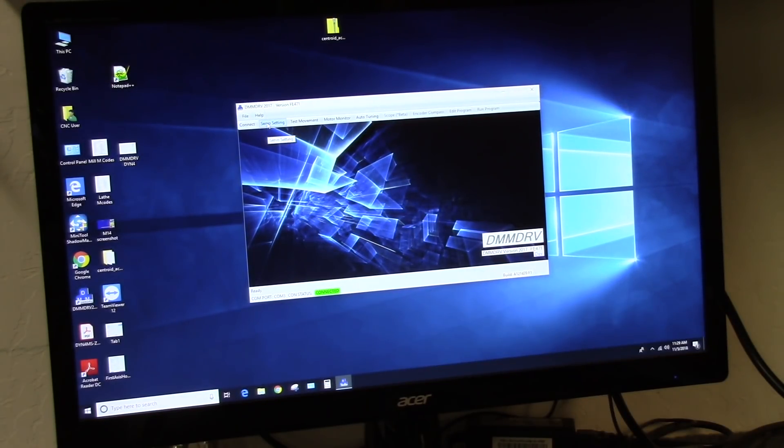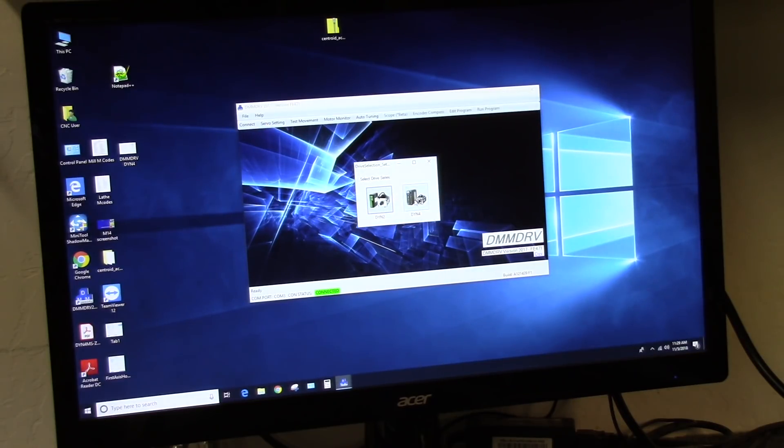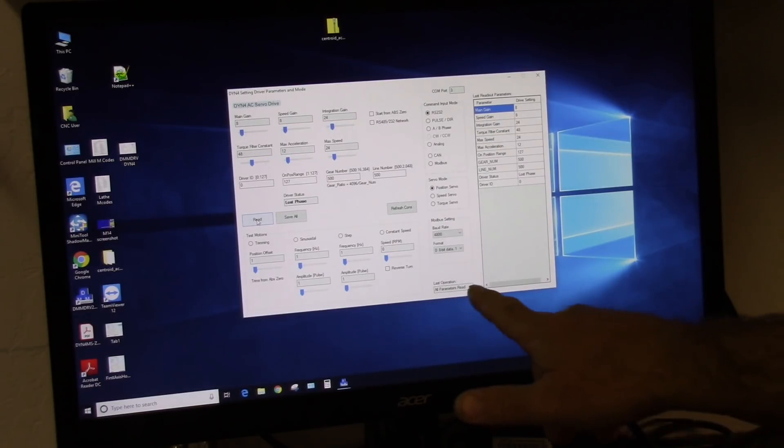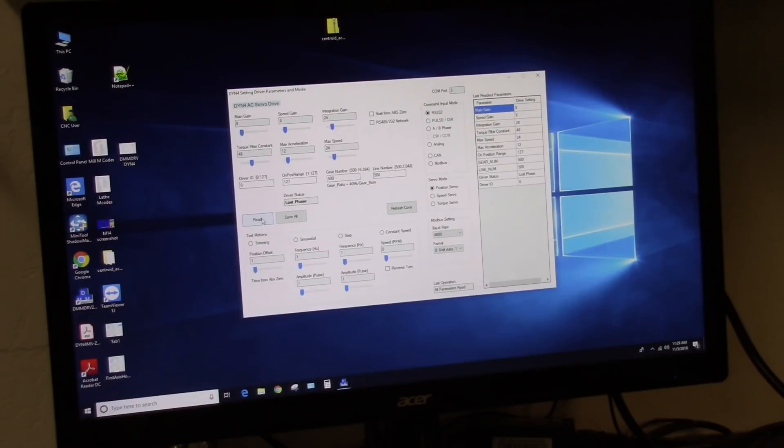I'm going to go into servo setting. We're going to select DYN4. And then all I'm going to do is I'm going to go into gear number, set that to 2000, and I'm going to set it into pulse dir, which is step and direction. And I'm going to read to the drive. All parameters. Well, actually I read from the drive. So what I want to do is I'm going to change this to 2000.